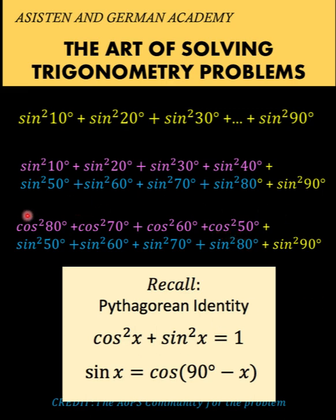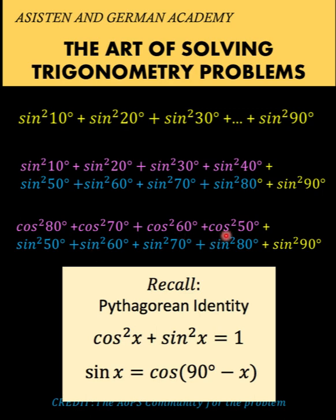Notice now that we have cosine squared 80 degrees and sine squared 80 degrees — the same angle x, both squared — so their sum equals 1. Cosine squared 70 degrees and sine squared 70 degrees also sum to 1. Cosine squared 60 degrees and sine squared 60 degrees is also 1. The same applies to cosine squared 50 degrees and sine squared 50 degrees.